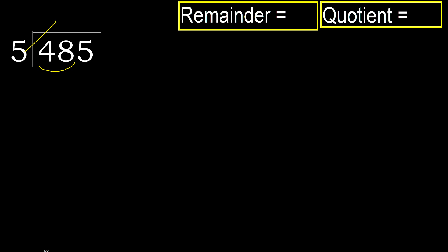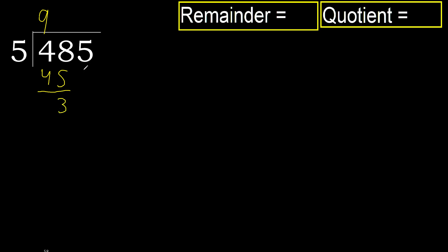5 multiplied by which number is nearest to 48 but not greater? 5 multiplied by 9 is 45, which is not greater. 48 minus 45 gives a remainder of 3.